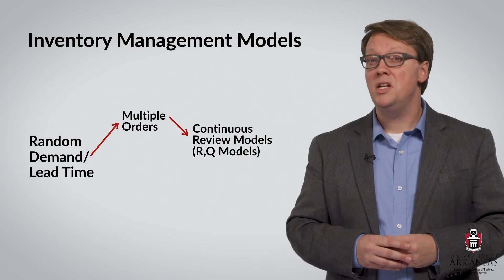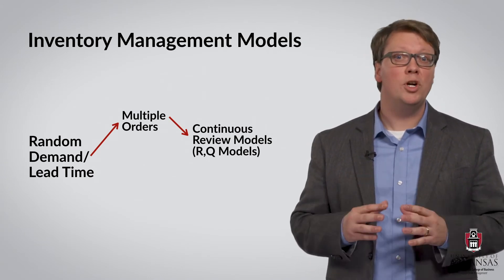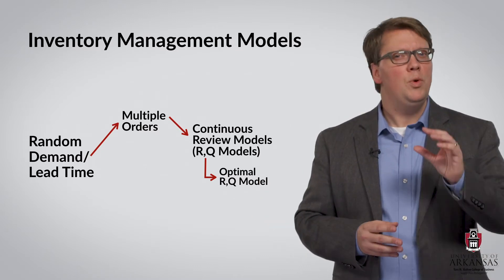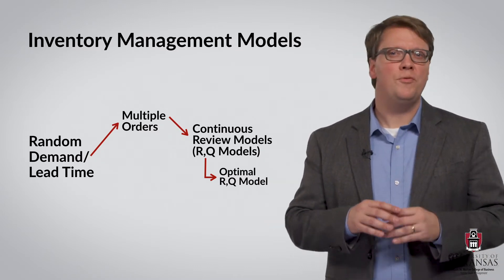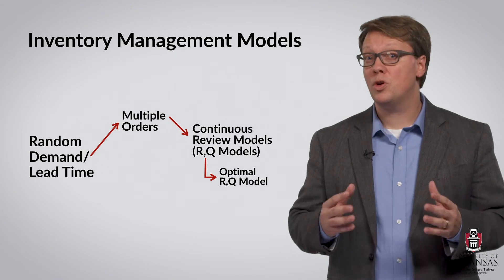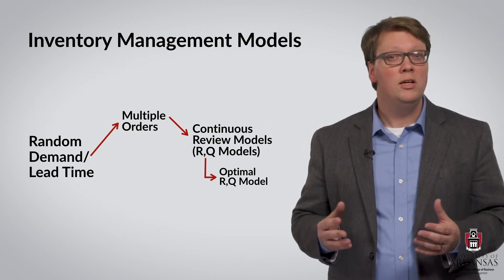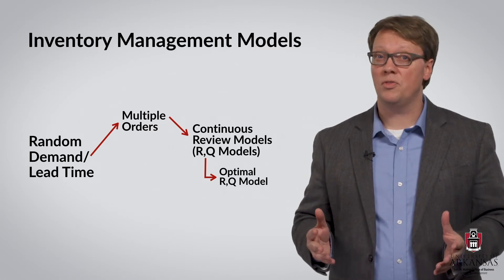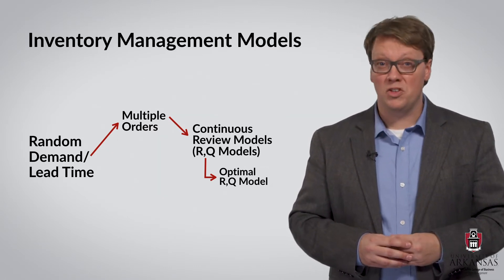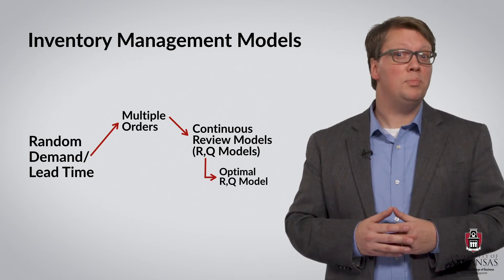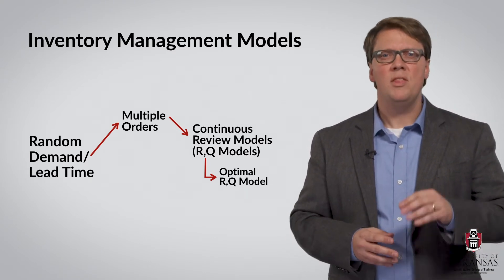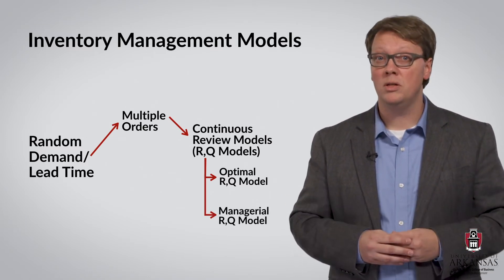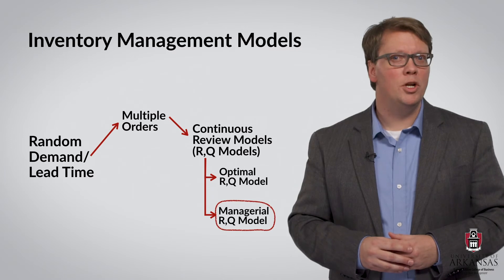Focusing on the continuous review model, we have learned about the optimal reorder point or RQ model. We call it optimal because we find the values of the order quantity Q and the reorder point R so as to minimize the sum of all relevant costs. But sometimes that's not possible for reasons I will explain in a moment. The next best thing, then, is a managerial RQ model, and that is what we will learn about here.